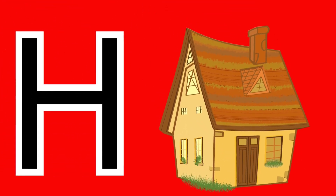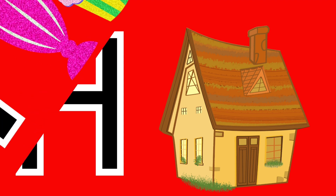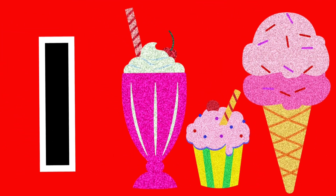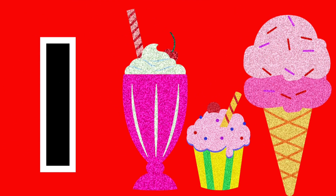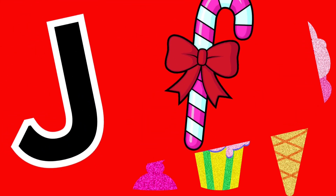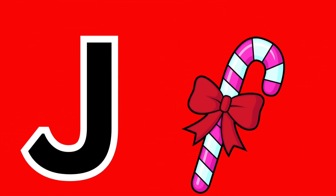H is for house. House mean gar. I is for ice cream. Urdu mein bhi ice cream. J is for jelly. Urdu mein bhi jelly.